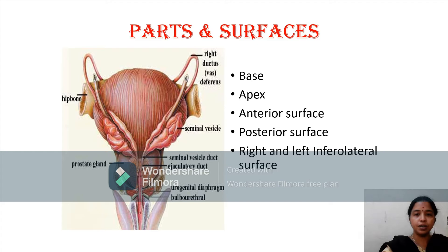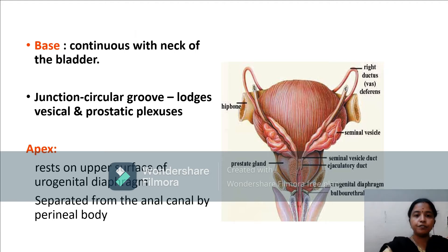The parts of the prostate gland include the apex, base, anterior surface, posterior surface, and right and left inferolateral surfaces. The base is related to the neck of the urinary bladder. The junction of the base of the prostate and the neck of the urinary bladder has a circular groove which lodges the prostatic and vesical plexuses. The apex lies over the upper surface of the urogenital diaphragm and is separated from the anal canal by the perineal body.